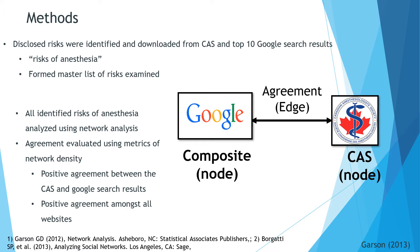The disclosed risks were analyzed using network analysis, where the network is basically the identified list of risks from each website. The dots, or nodes, are each individual website, and the edges represent agreement in a risk disclosed by two websites. The more saturated the network is, the better the agreement between websites. Agreement was evaluated using several metrics of overall network density, including positive agreement between the CAS and the composite Google search results, and positive agreement between all examined websites including the CAS. Positive agreement refers to risks stated on at least two websites. The compiled data was analyzed using UCINet and Microsoft Excel.